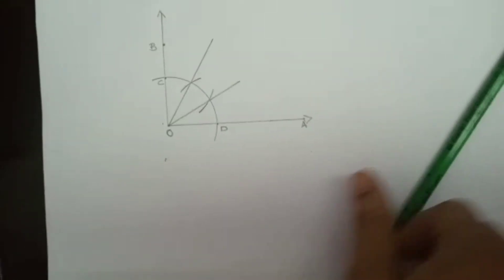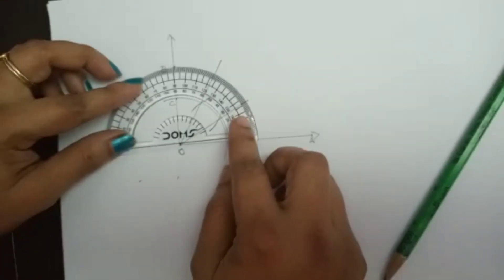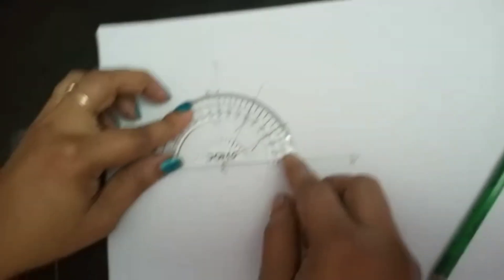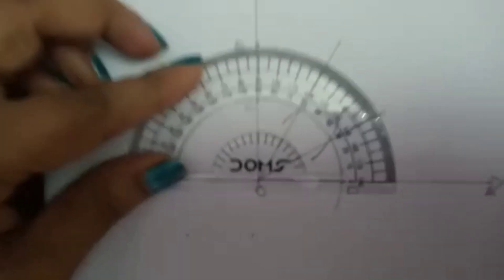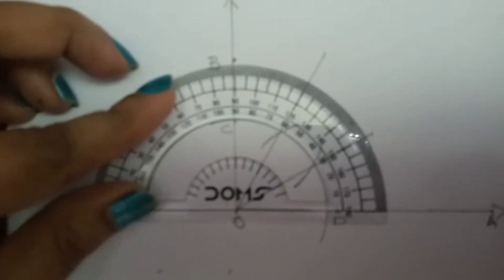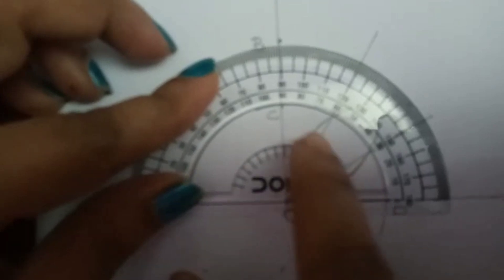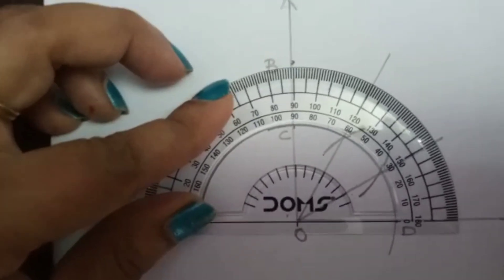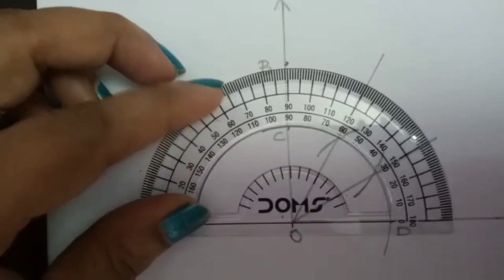Now we have to check whether we got the correct angle. Here you can see we got a 30-degree angle, 60-degree angle, and 90-degree angle.